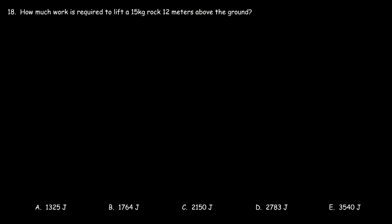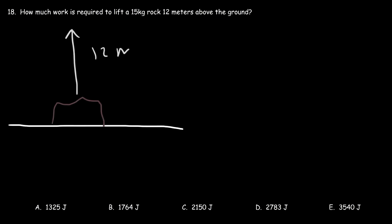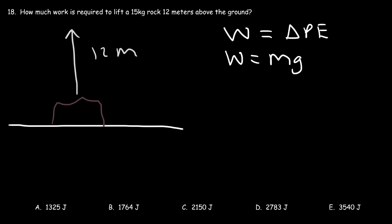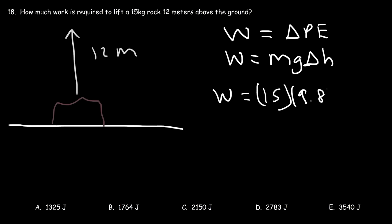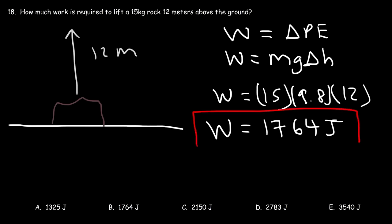Number 18: how much work is required to lift a 15 kg rock 12 meters above the ground? The work equals the change in gravitational potential energy: W = mgΔh = 15 × 9.8 × 12 = 1764 joules. Answer B.